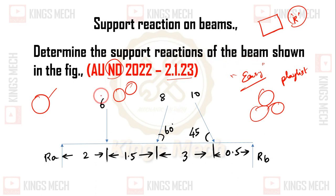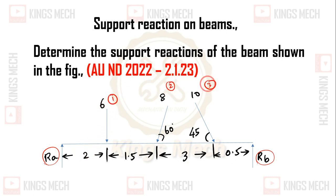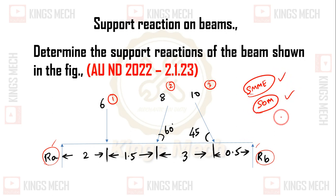Determine the support reactions of the beam shown in the figure. It is nothing but a simply supported beam — both ends have been simply supported. We have three forces: 6, 8, and 10. This is the support reaction problem, very common in strength of materials for mechanical engineers.